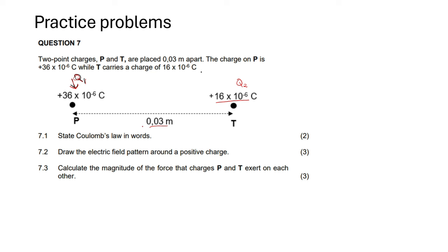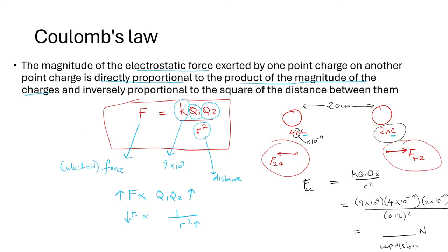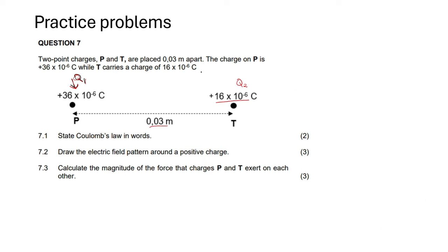Question 7.1 says: state Coulomb's Law in words. Whenever they ask this, you state: 'The magnitude of the electrostatic force exerted by one point charge on another point charge is directly proportional to the product of the magnitude of the charges and inversely proportional to the square of the distance between them.' That's how you state Coulomb's Law.